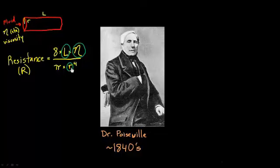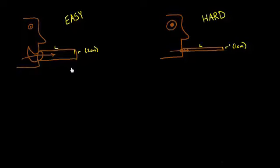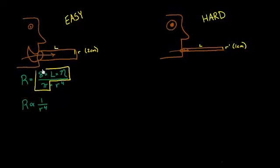We can actually use this to understand what happened earlier. In this earlier example, let's take that resistance formula. Big R equals 8 times L times η over π times r to the fourth. I'm going to replace this with resistance is proportional to 1 over r to the fourth. You can see there's a relationship: as the radius gets very big, the resistance is going to get very small. It's going to happen very quickly because you're raising the radius to the fourth power.